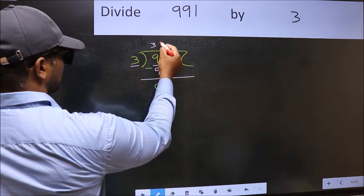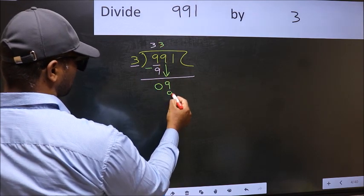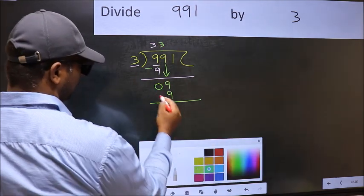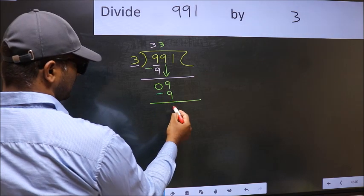When do we get 9 in 3 table? 3 times 3 is 9. Now you should subtract. 9 minus 9, 0.